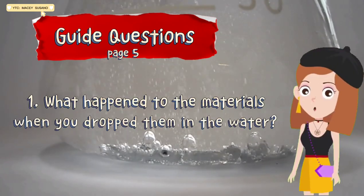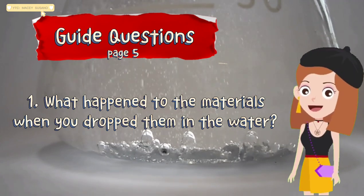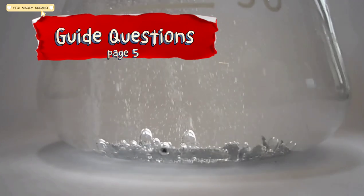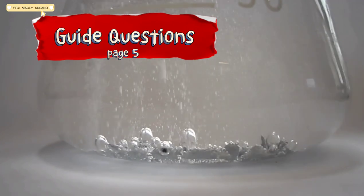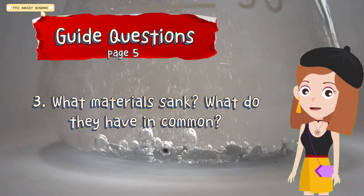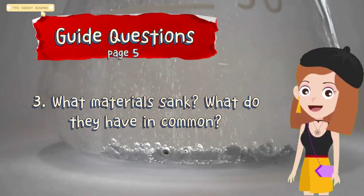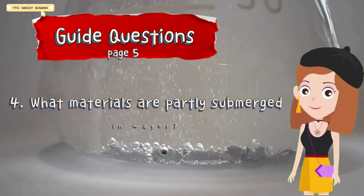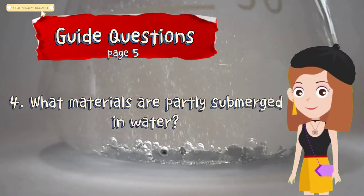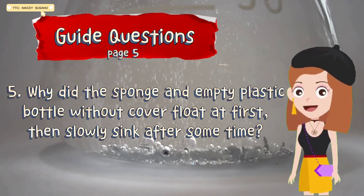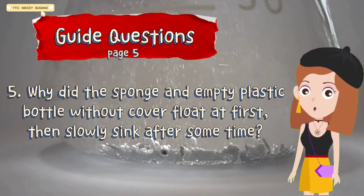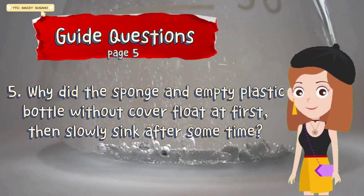Can you answer now these guide questions? First question, what happened to the materials when you dropped them in the water? Second, what materials floated? What do they have in common? Third, what materials sank? What do they have in common? Fourth, what materials are partly submerged in water? Fifth, why did the sponge and empty plastic bottle without cover float at first, then slowly sink after some time?